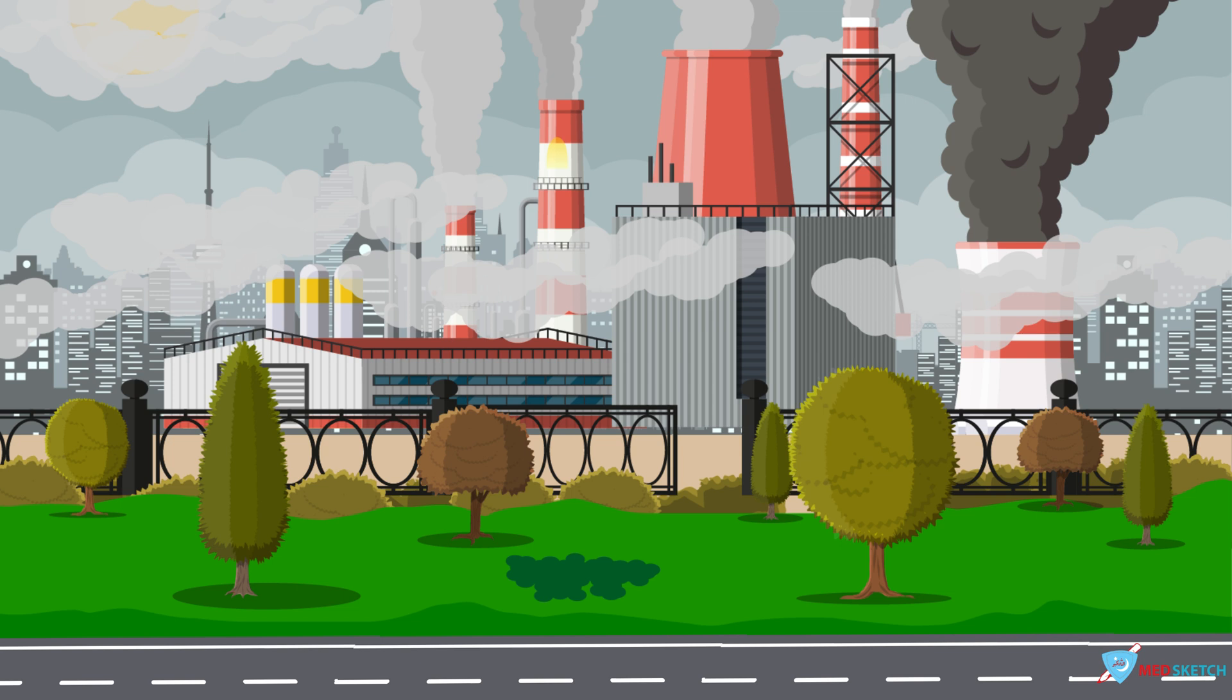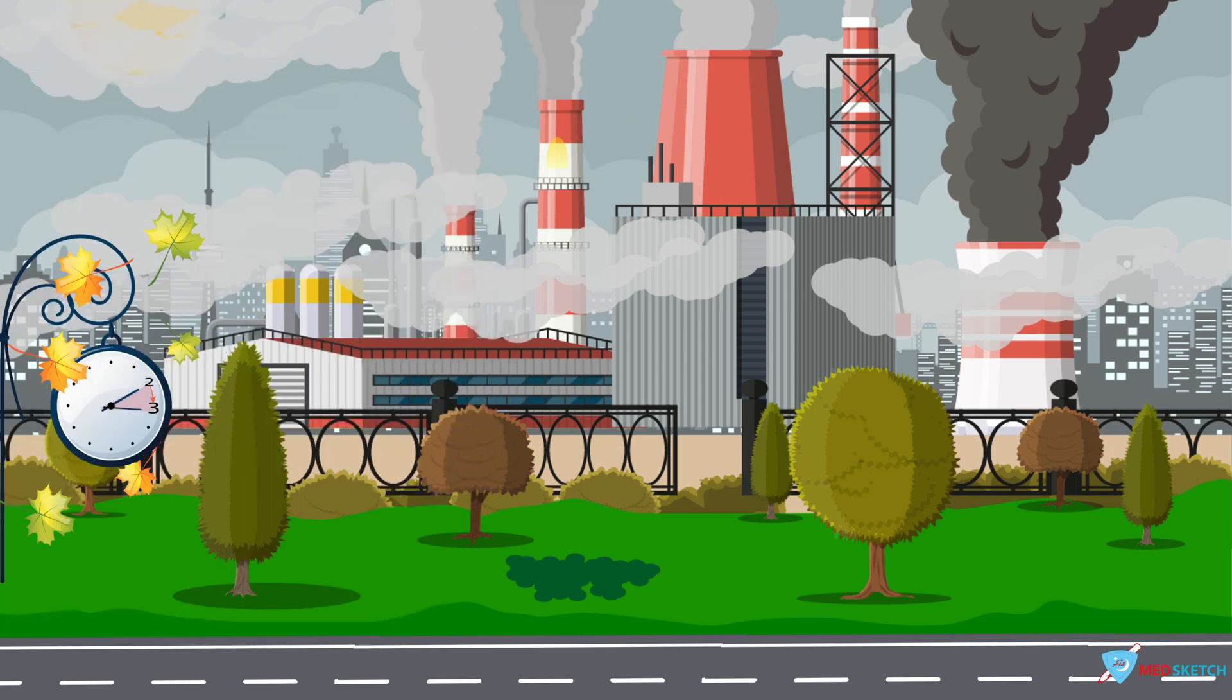Fatal period of carbon monoxide poisoning is represented by a clock on the left side of the scene that says two to three hours. The needles are stuck at two and three hours representing a period of two to three hours.